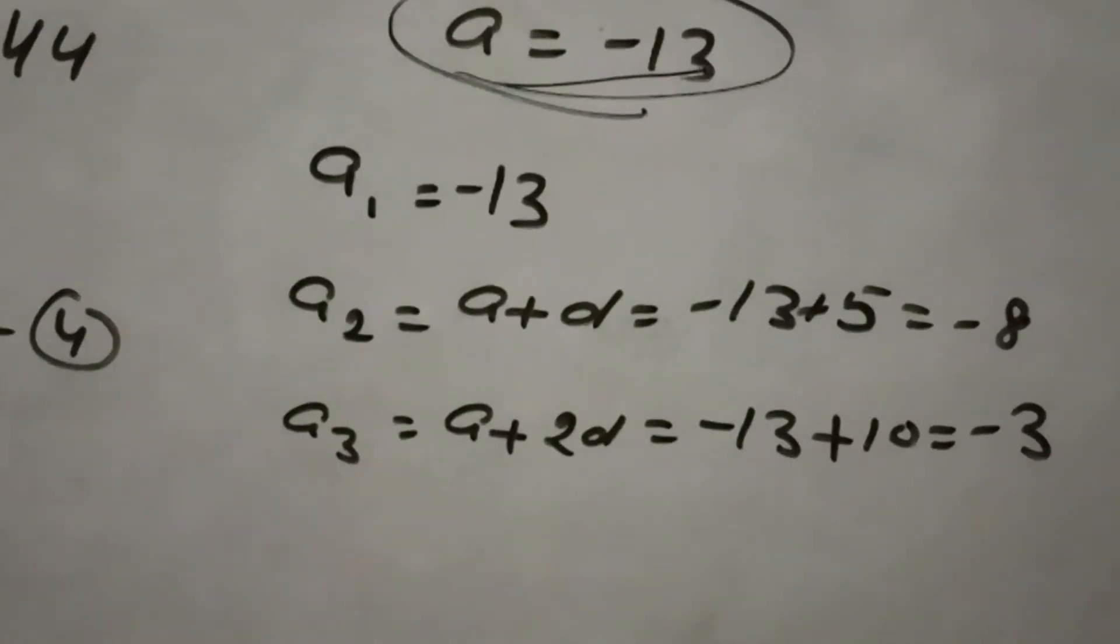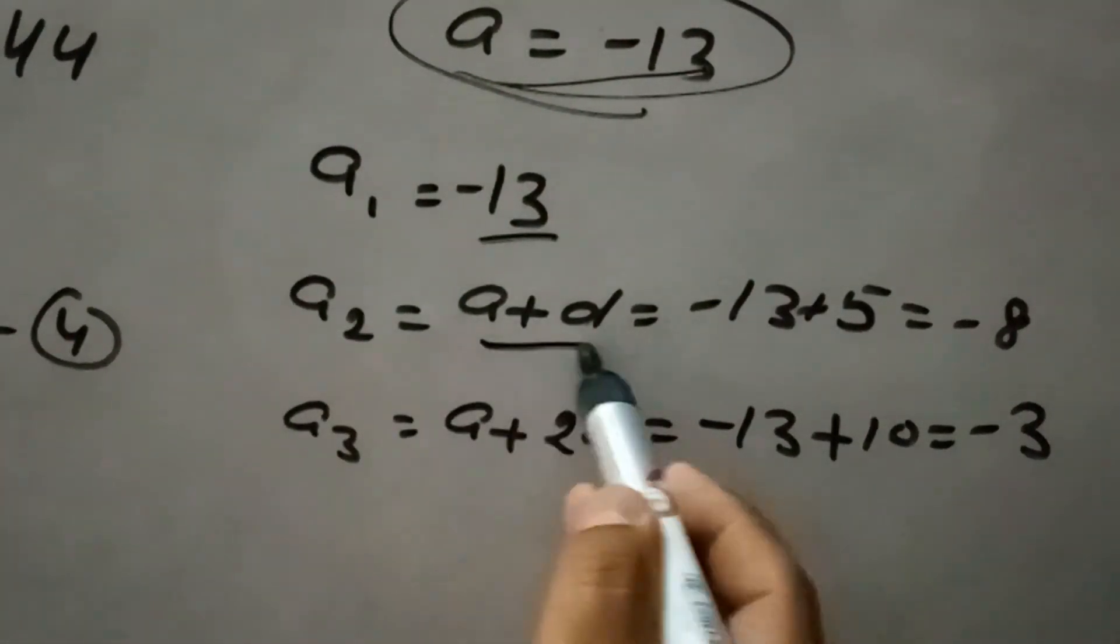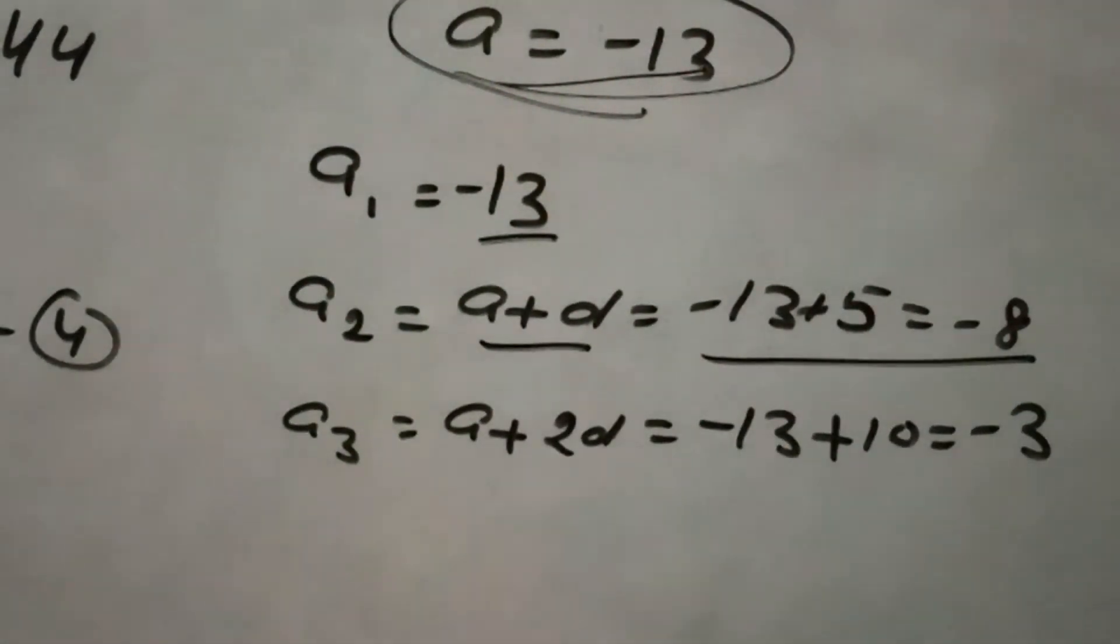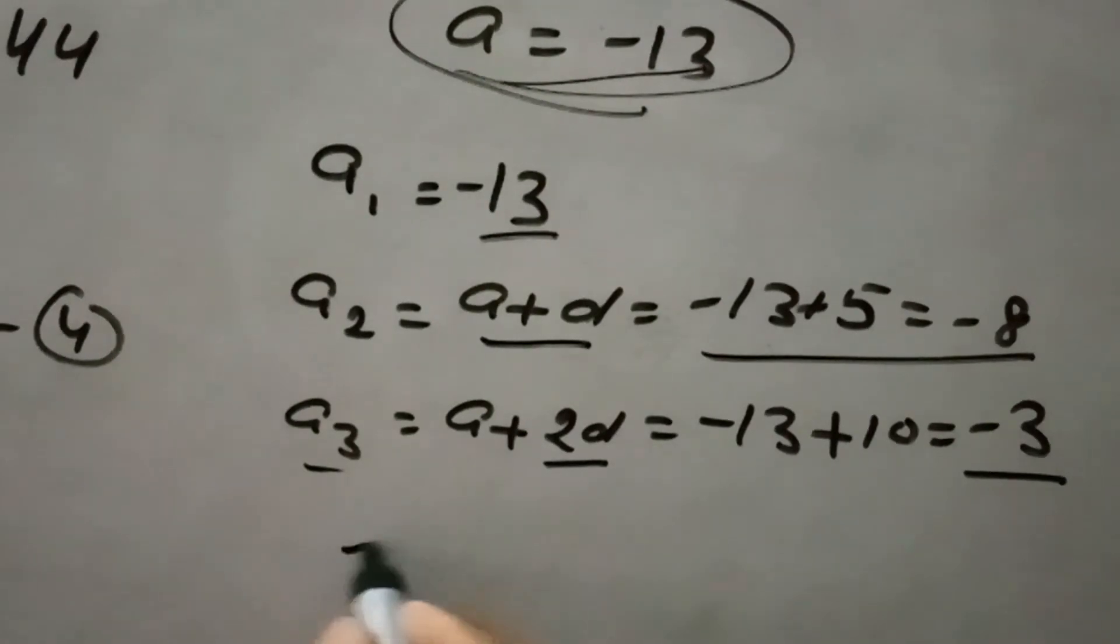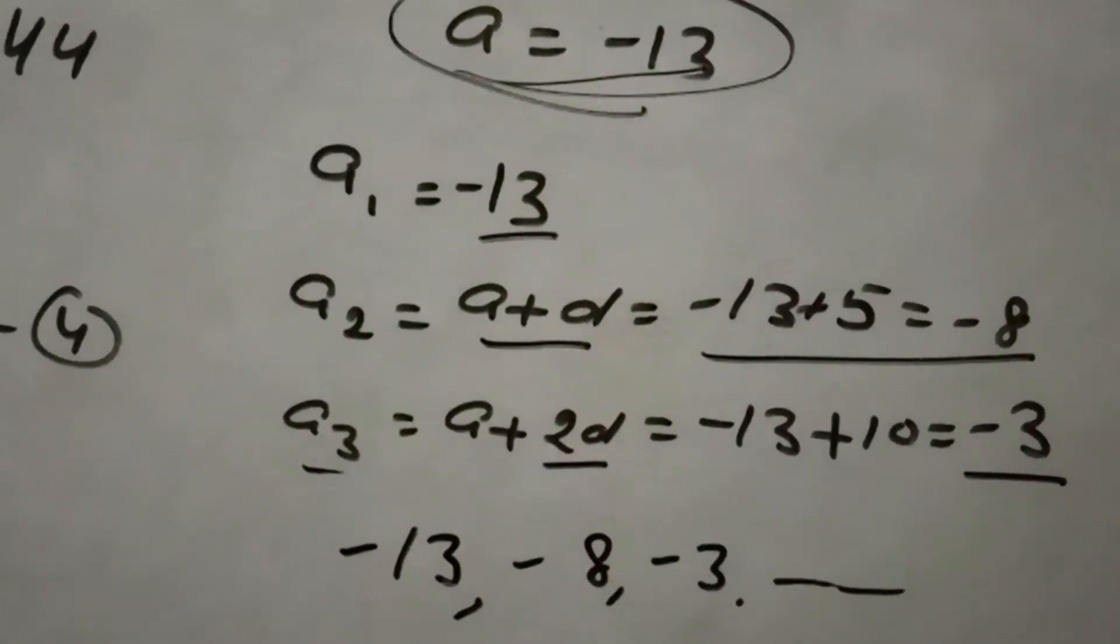For AP, first term is A which equals minus 13. Second term is A plus D which equals minus 13 plus 5 equals minus 8. Third term is minus 13 plus 2D, 5 times 2 equals minus 3. So therefore, the first three terms of AP are minus 13, minus 8, minus 3, and so on. This is the AP for this.